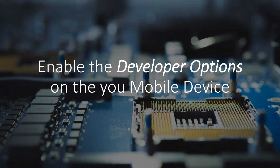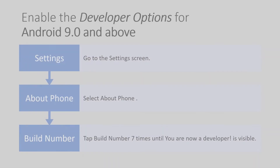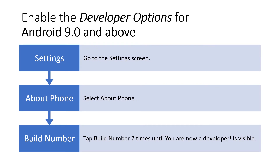Before we activate or enable the debugging mode for your mobile phone, we must first enable the developer options on your mobile phone. Developer options on Android have been hidden by default since version 4.2, and enabling them can vary based on the Android version. For Android 9.0 and higher, enabling developer options can be enabled by following these steps.